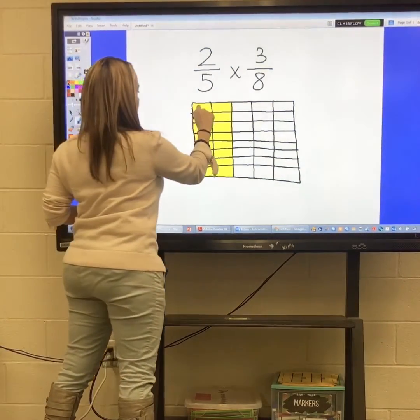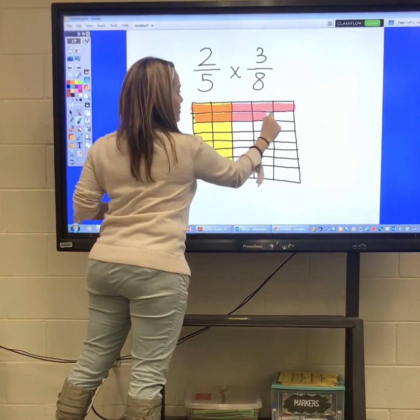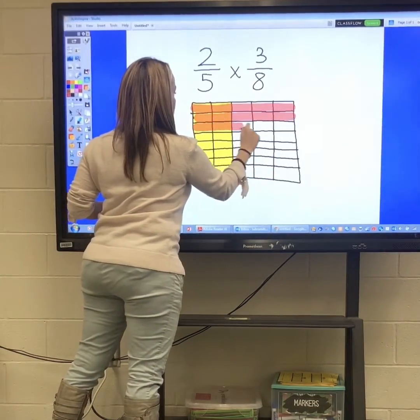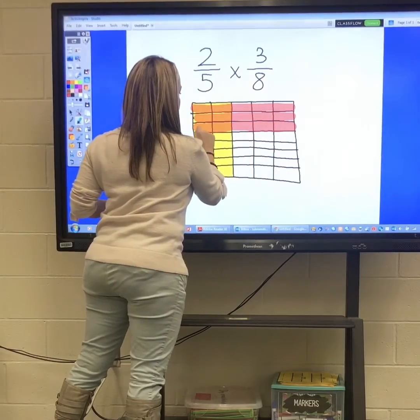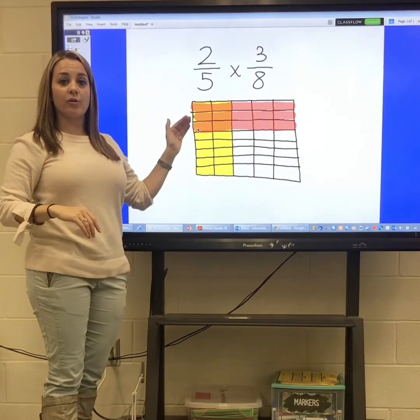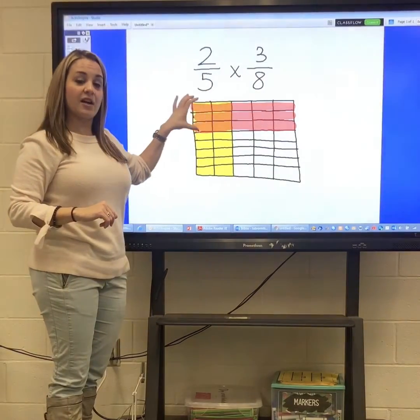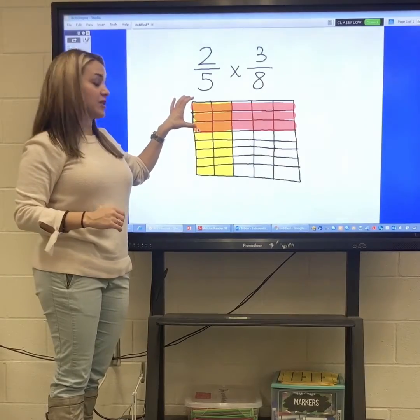So I'm going to fill in the first row, the second row, and the third row. This is finding 3 eighths of the entire box, but the part that we're going to be focusing on is the 3 eighths of just the 2 fifths that we started with.